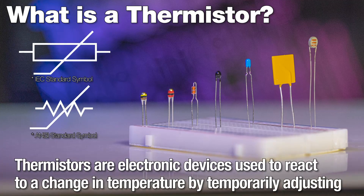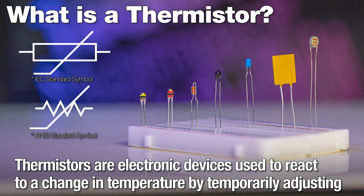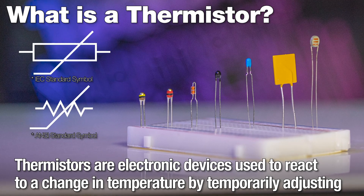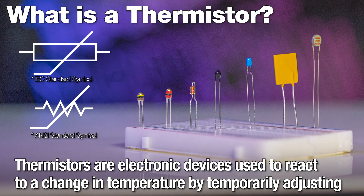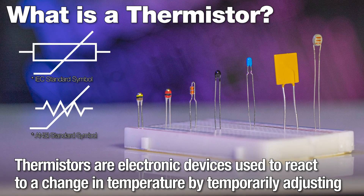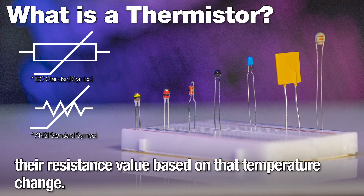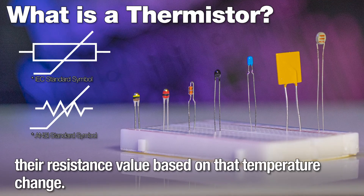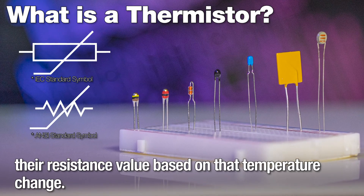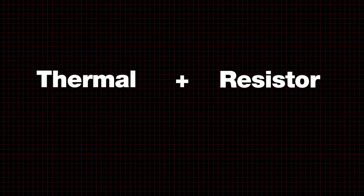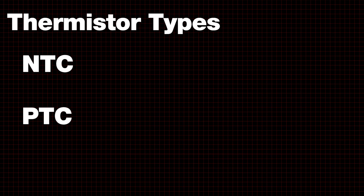Thermistors are electronic devices used to react to a change in temperature by temporarily adjusting their resistance value based on that temperature change. The term thermistor is a mix of the words thermal and resistor. There are two types of thermistors: NTC and PTC.